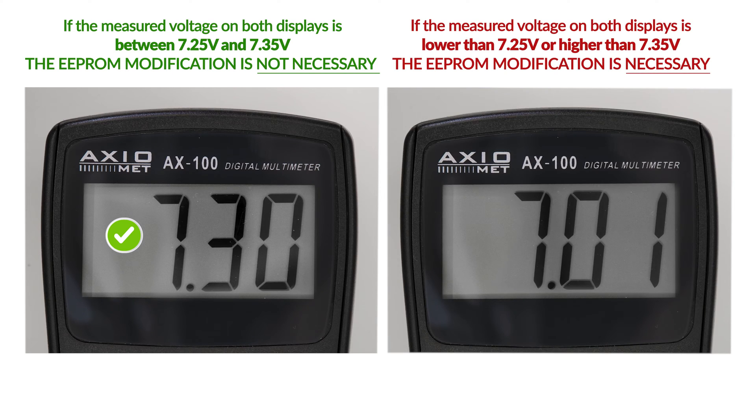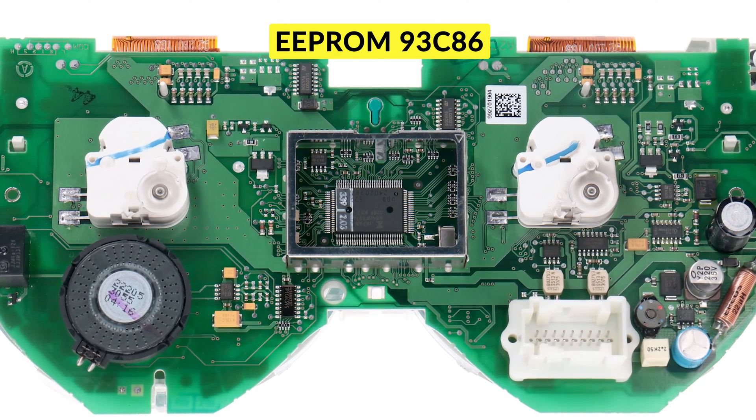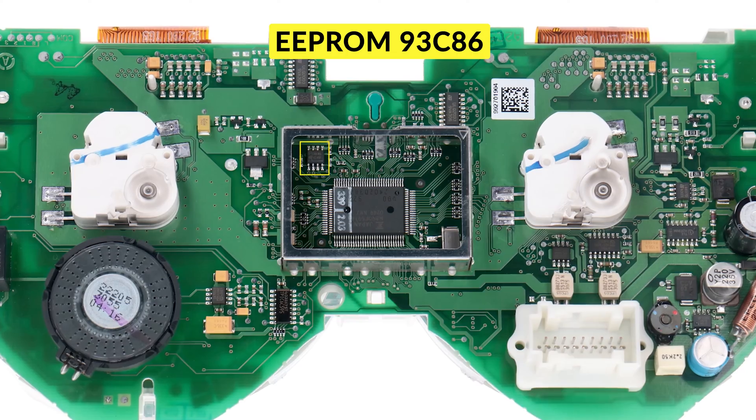Otherwise, to adjust the voltage and the display contrast, it will be necessary to do a modification of the EEPROM 93C86 with a specific programmer.